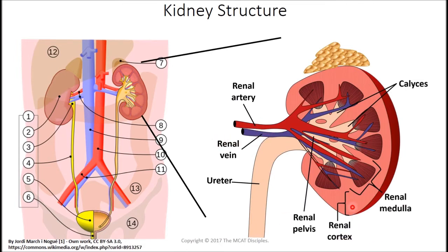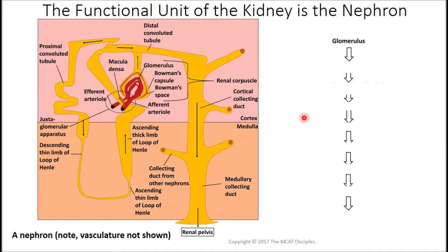We have a renal cortex — the outer region — and a renal medulla. The renal medulla regions are the darker areas with lines, and the renal cortex is the lighter outer area. The renal medulla feeds into the calyces — plural for calyx — which collecting ducts empty their filtrate into. The calyces coalesce to form the renal pelvis, which then goes on to form the ureter. Blood supply comes from the renal artery and renal vein, originating from the aorta and inferior vena cava respectively. The functional unit is the nephron, found in both cortex and medulla.